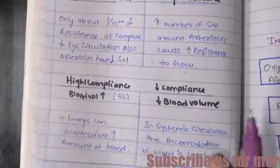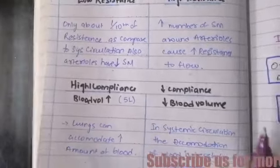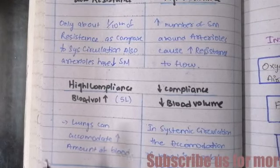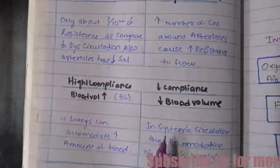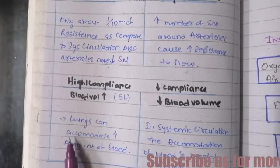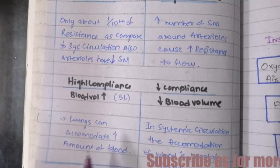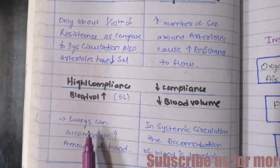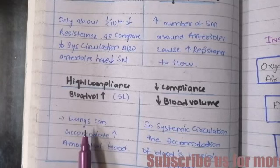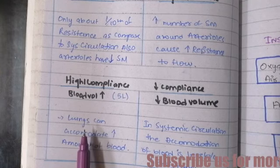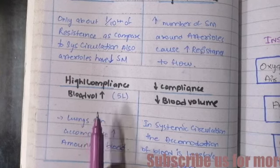The third important difference is about compliance. Compliance is the amount of blood accommodated in the organ — that can be the lung, or in systemic circulation it can be the other systems of the body. The lungs have high compliance because they can accommodate a large amount of blood, and a particular amount of blood must be supplied to the lungs for the exchange of carbon dioxide and oxygen. So the lungs have high compliance and can accommodate a large blood volume.